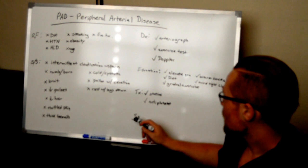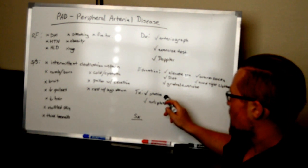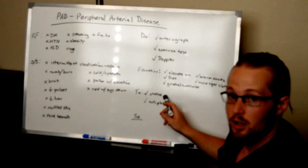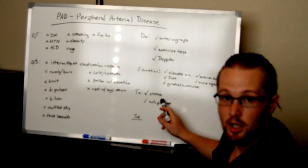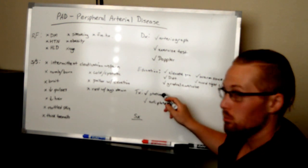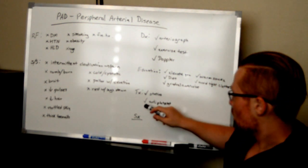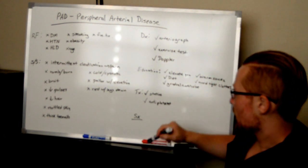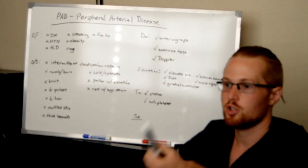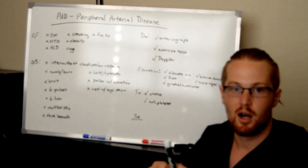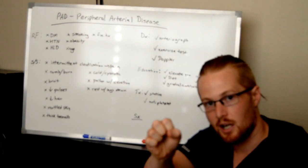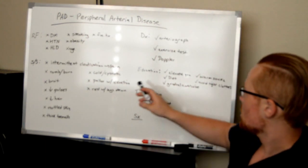If surgery isn't needed, they may discharge the patient on statins, which are medications to lower cholesterol and lower fats that could lead to plaque formation. Or they may place them on anti-platelet medications such as aspirin or Plavix, which will prevent blood clots from developing in those tight, narrow spaces in the arteries.